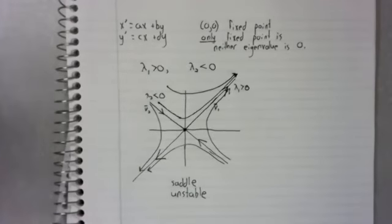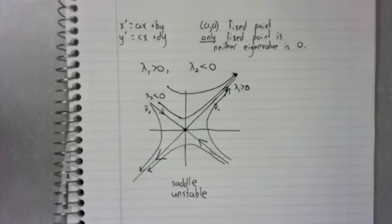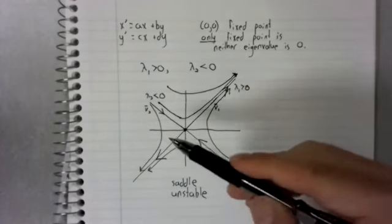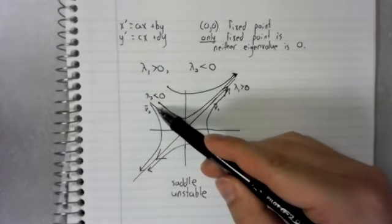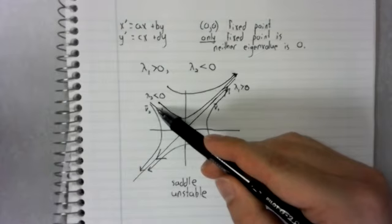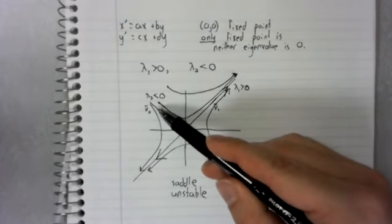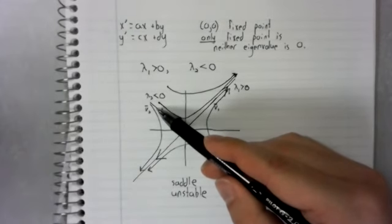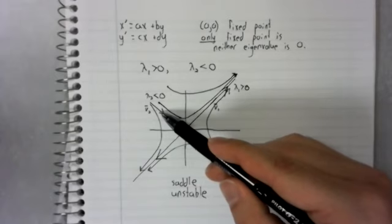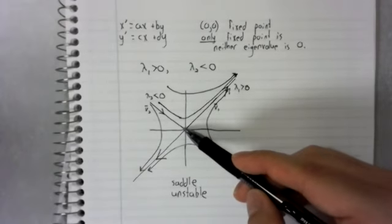Now, if you remember our informal definition of instability, where we said that points near a fixed point go away from the fixed point, you might ask, what about points on this eigenvector? They don't go away from the fixed point, which is true.